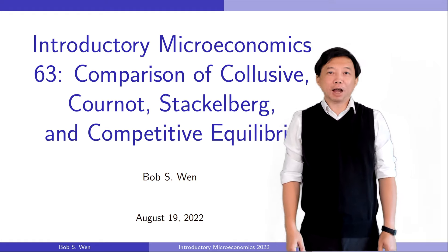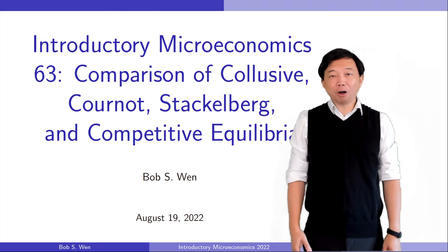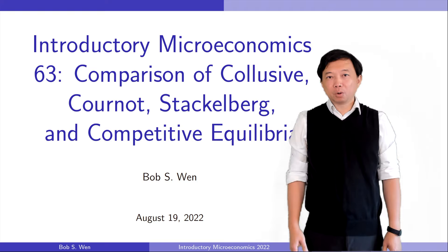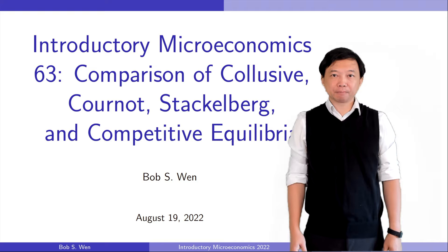Hi, I'm Bob. When I started to introduce the oligopoly firm some days ago, I mentioned that if the firms collude, they act like a monopoly firm, charge the monopoly price, and share the monopoly profit. Then we discussed two models for the oligopoly firms when they choose quantities independently and interdependently. They are the Cournot model and the Stackelberg model.